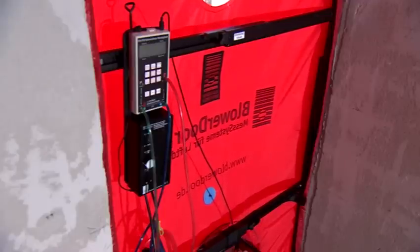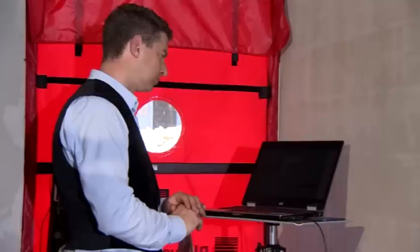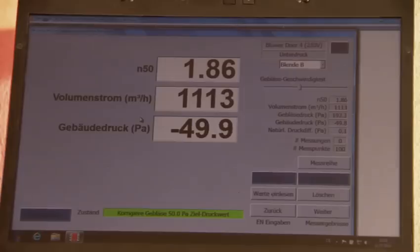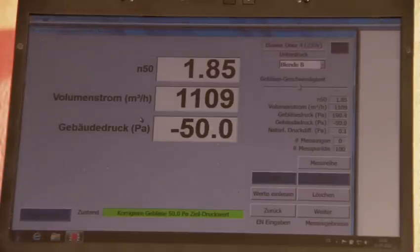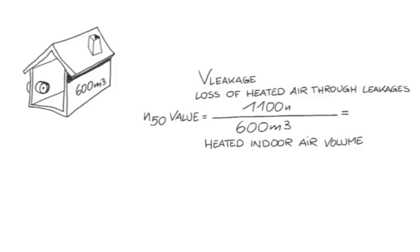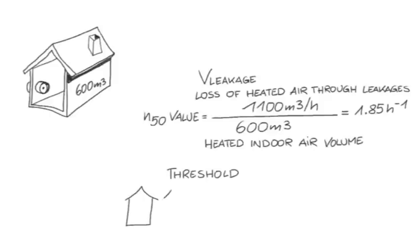In our example, the fan delivery rate is 1,100 cubic metres per hour. Hence, 1,100 cubic metres of warm air escape in case of a heated indoor volume of 600 cubic metres. 1,100 cubic metres per hour divided by 600 cubic metres results in a value of about 1.85. The air in the building has been changed 1.85 times per hour. For buildings with natural ventilation, the air change rate must not exceed 3 per hour. For buildings with a ventilation system, the air change rate must not exceed 1.5 per hour.